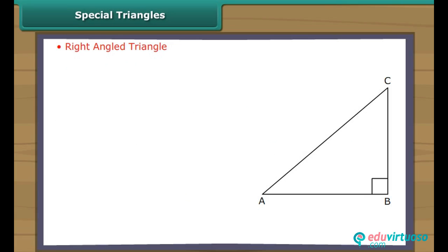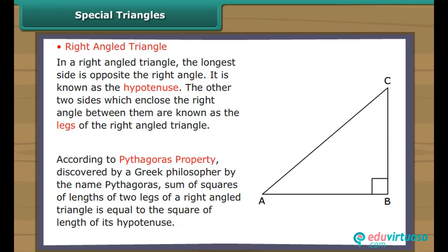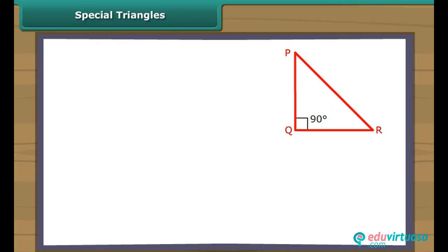Right-Angled Triangle. In a right-angled triangle, the longest side is opposite the right angle and is known as the hypotenuse. The two sides which enclose the right angle between them are known as the legs of the right-angled triangle. According to the Pythagoras property, discovered by the Greek philosopher Pythagoras, the sum of the squares of the lengths of the two legs of a right-angled triangle is equal to the square of the length of its hypotenuse. In right-angled triangle PQR: PQ² + QR² = PR².